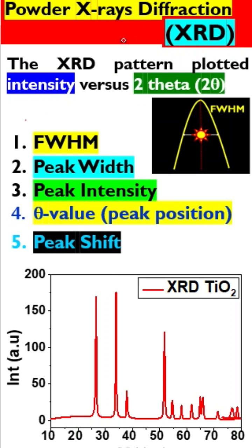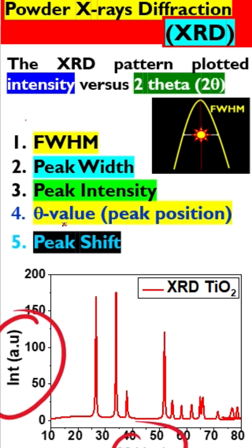X-ray diffraction is a very important technique in nanotechnology. It basically gives a graph which is plotted between intensity and two-theta angle. When we are analyzing an XRD graph, there are five things which play a very important role.